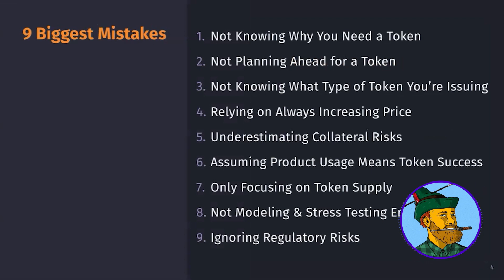The nine biggest mistakes to avoid while going through this process are: not knowing why you need a token, not planning ahead for a token, not knowing what type of token you're issuing, relying on price always increasing, underestimating collateral risks, assuming your product usage means token success, only focusing on token supply instead of token demand and utility, not modeling and stress testing enough, and ignoring regulatory risks. I see these nine mistakes all the time, and hopefully by talking about them today, it helps you avoid making the same mistakes.